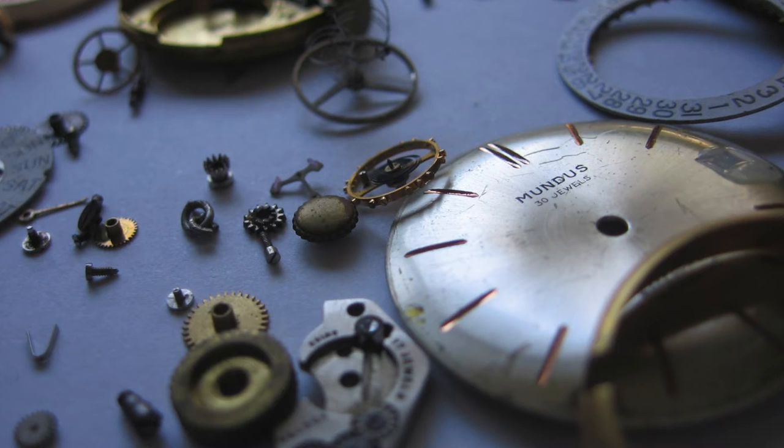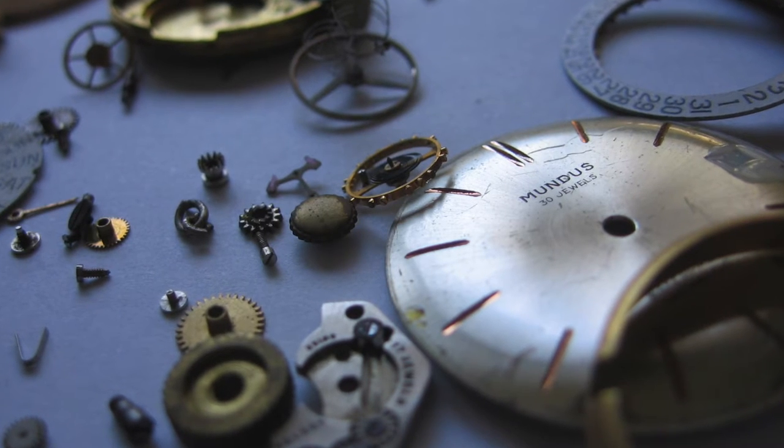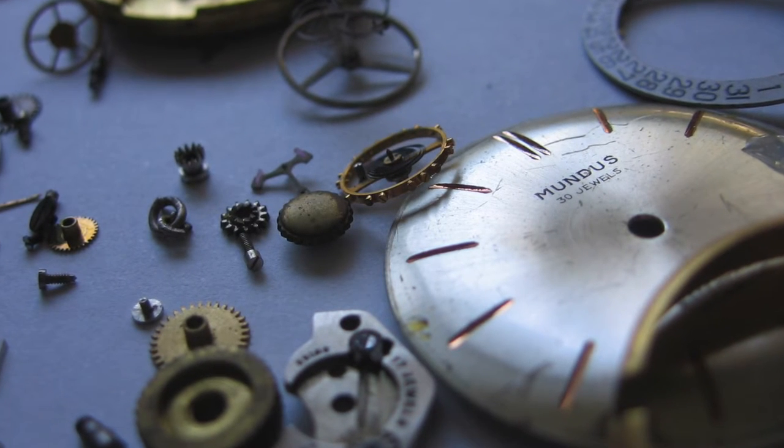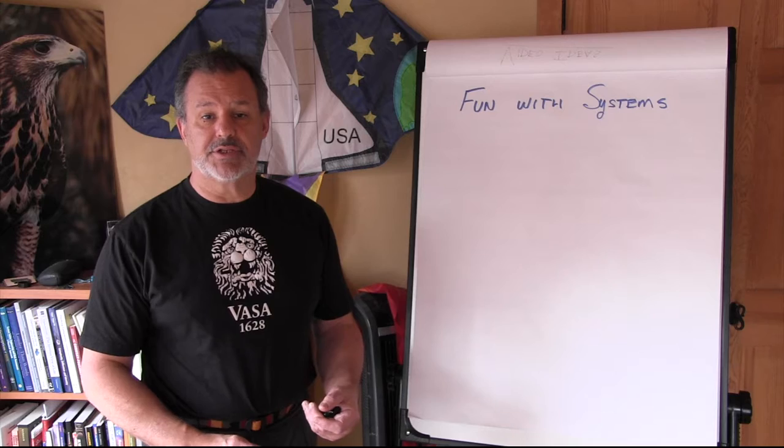If a part in that system breaks, we know we can identify the part by taking the watch apart, remove that broken part, put a new part back in its place, and the system would function again.